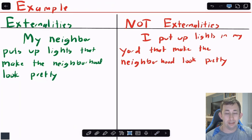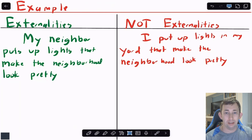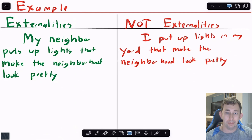On the flip side, just to be clear — it is not an externality for me to say, 'I get a positive externality because I make the neighborhood look better by putting up Christmas lights.' I am not the one experiencing the externality, because I'm not a third party. I was directly involved in choosing whether to put Christmas lights on my house, so I can't get an externality out of a decision I was directly part of.